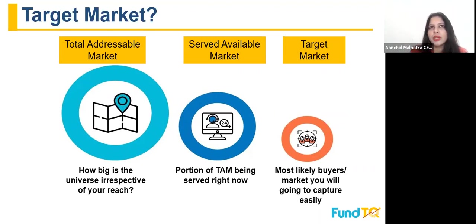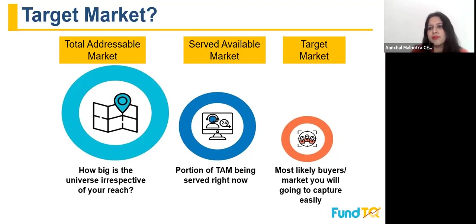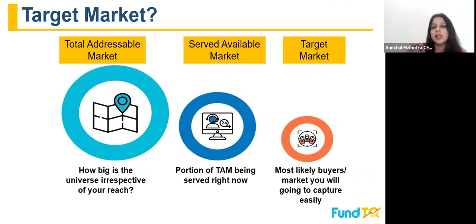For example, your product can be sold globally — the global education market size is 1,000 billion dollars. But there is no internet penetration in 40% of the regions globally, so it becomes a 600 billion dollar market. Out of that 600 billion, you can only capture 20% with this level of product — that becomes your target market. Target market is the short-term market a startup would like to capture. This is all about total addressable market and target market.